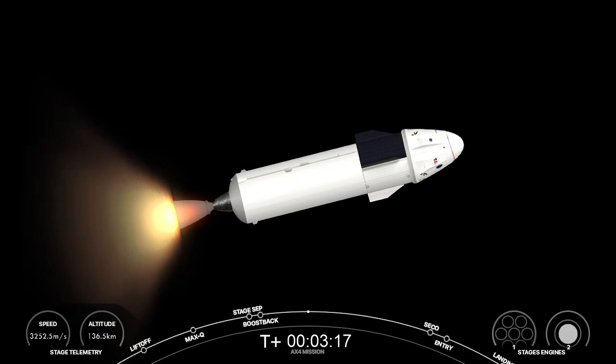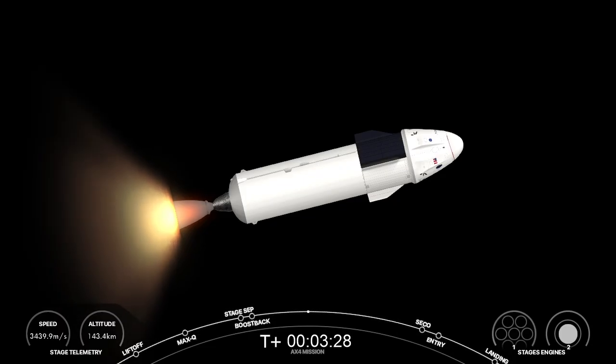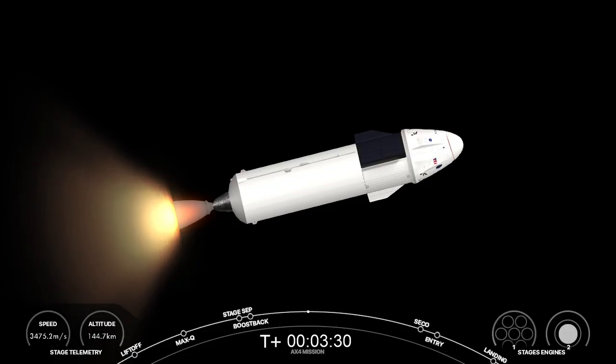At this point stage one is actually still coasting to apogee. We are about to deploy those grid fins so that we can steer the vehicle as it enters the Earth's atmosphere. Dragon SpaceX, nominal trajectory. And that call out from Mission Control means that - Dragon copy, nominal trajectory - everything is right on track.